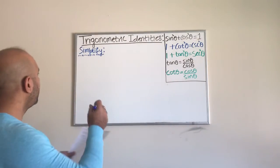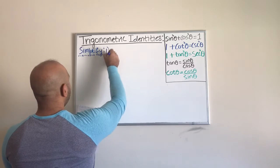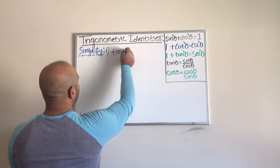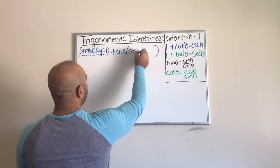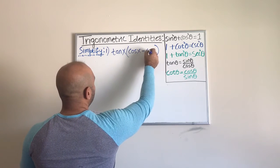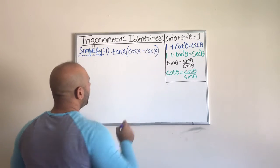Let's start with the first example. For example one, I have tan(x) times the quantity cosine(x) minus cosecant(x).